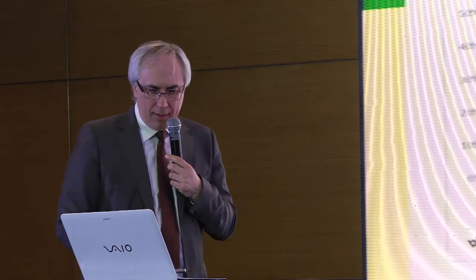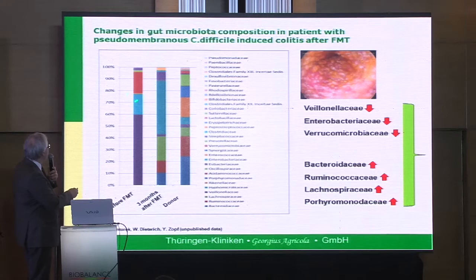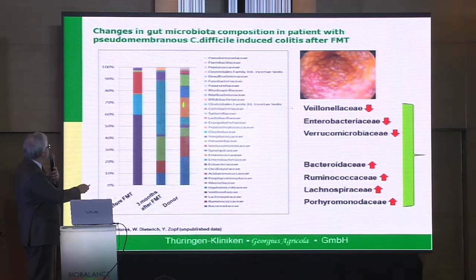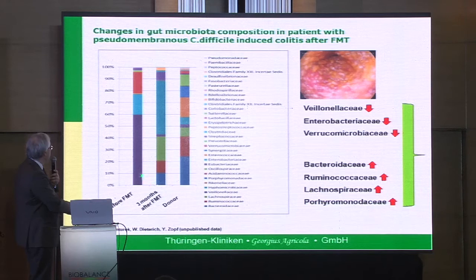If I show you one patient: before FMT, very low diversity with very few bands. The donor on the right had much higher diversity. Three months after FMT, the microbiome in the stool changed towards what we observed in the donor. So we have a kind of transplantation of microbiota.